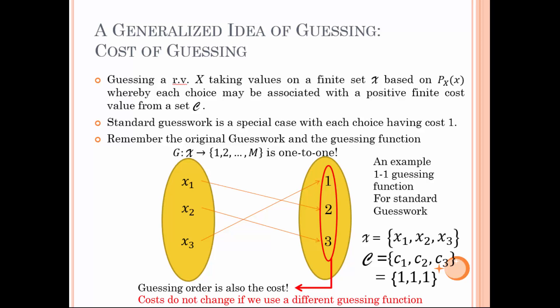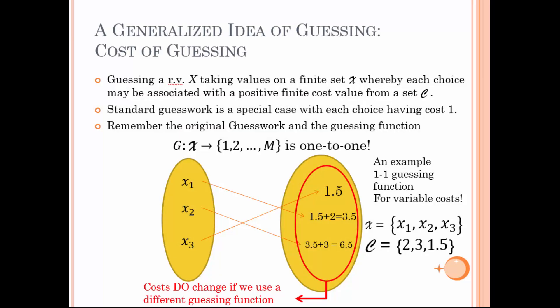In this slide, you are seeing a guessing function for the standard guesswork whereby costs are assumed to be 1 for each choice. The guessing order determines the accumulated costs, and hence the guessing order is also the guessing cost. We notice that accumulated cost values in the image set do not change even if we use a different guessing function. So let us change the cost from 1 to some other arbitrary positive numbers such as 2, 3, and 1.5, associated with choices x1, x2, and x3 respectively. Unlike the standard guesswork, the order of guessing symbols does have an effect on the accumulated cost value because it totally changes the image set. In fact, the image set now becomes a function of the guessing strategy.